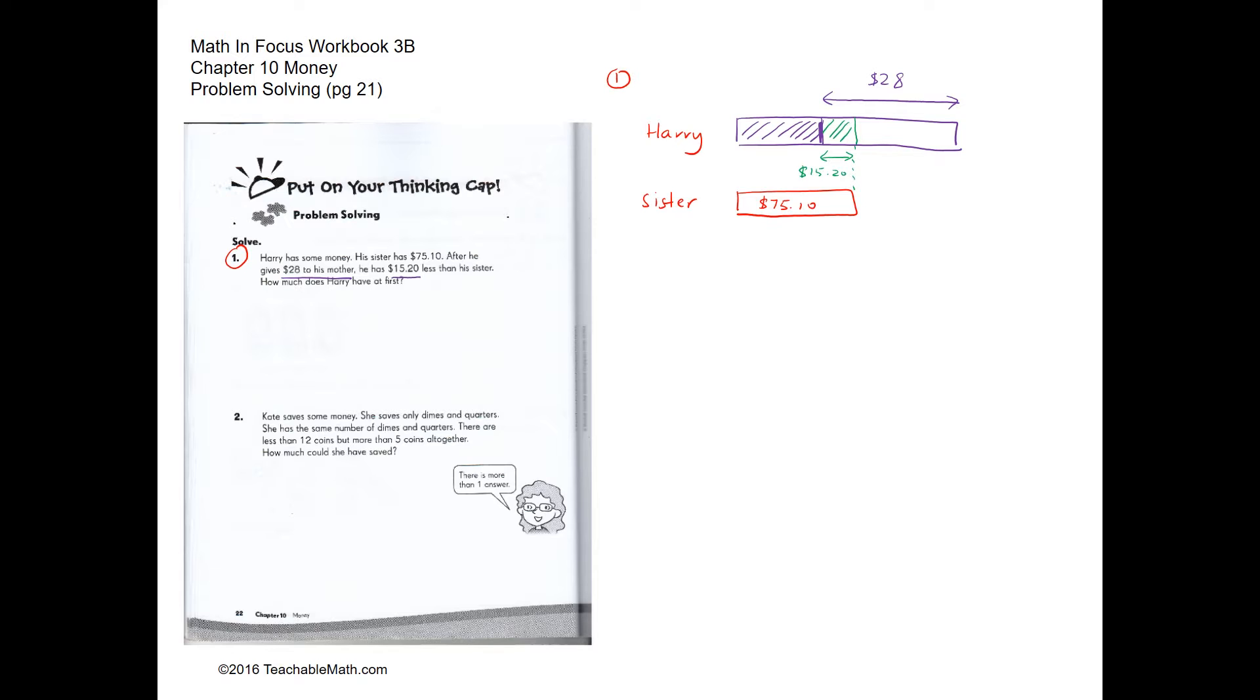So our job here is to find out how much he has at first. So how much do you have at first? Let's use a different color. So what is this amount that was more than his sister? To find out what is this amount, we will use $28 minus $15.20, and we can do the math over here. So $28, we're going to subtract $15...